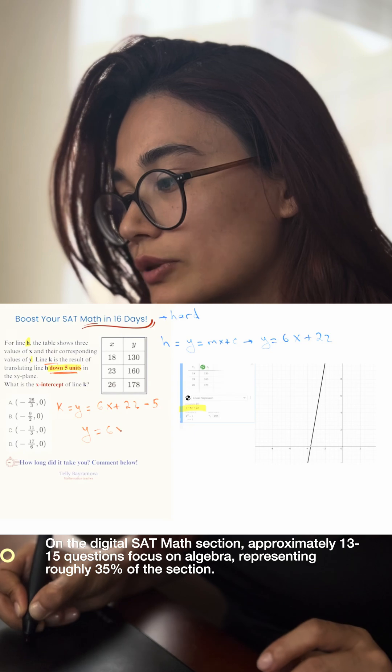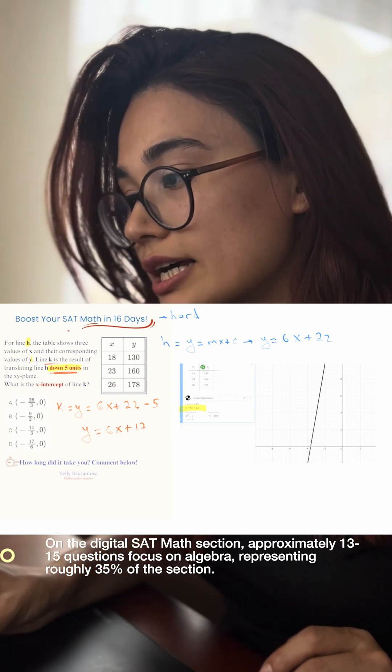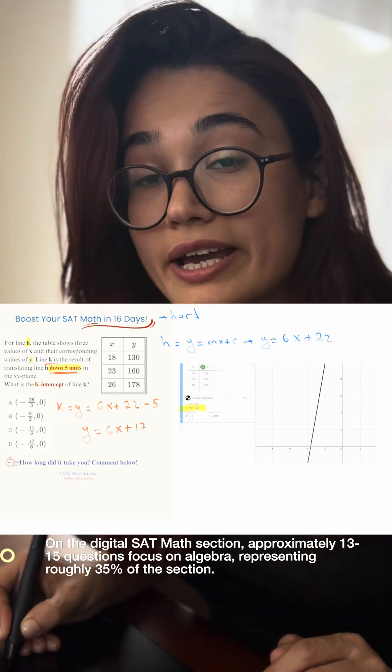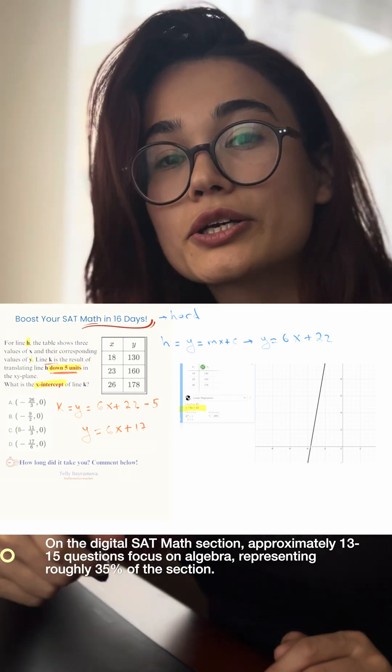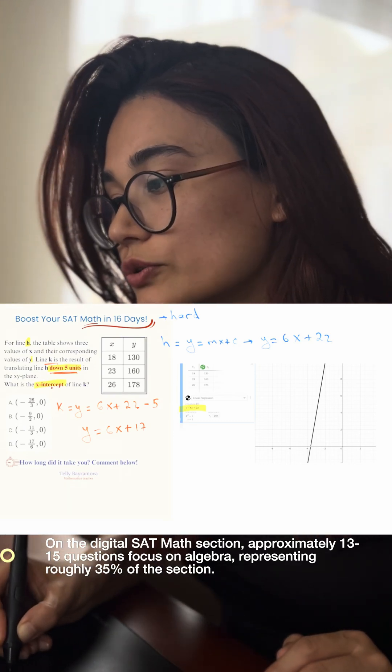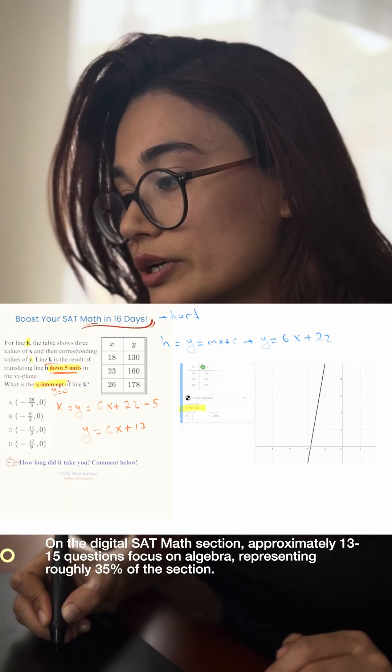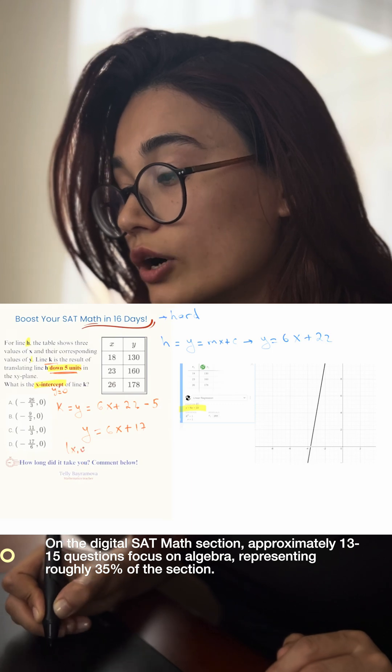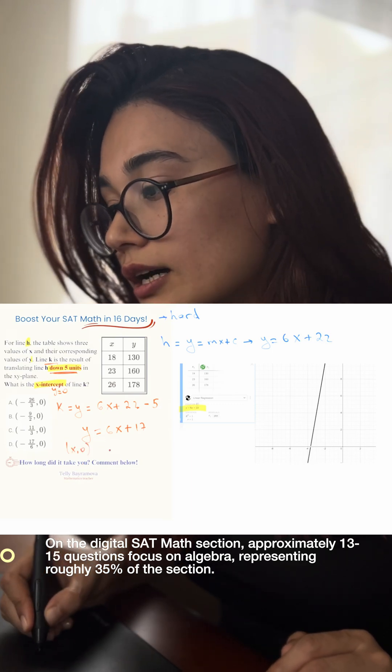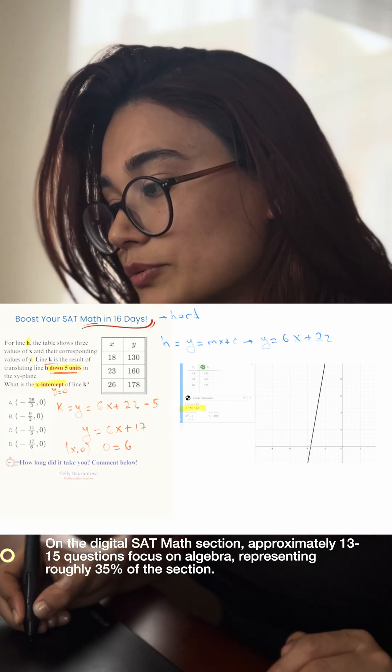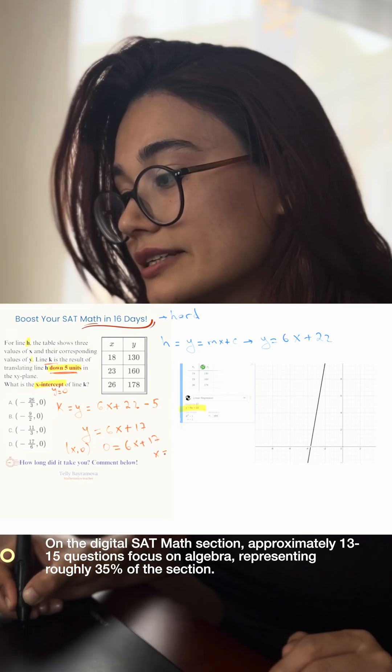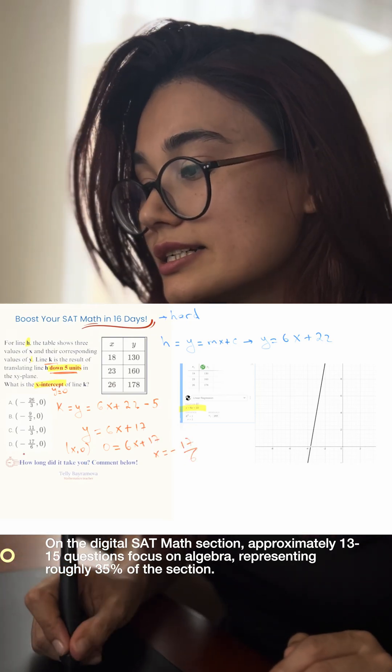X-intercept means that y equals zero. So when y equals zero, it means that as a coordinate you can show this as (x, 0). Let's find x: 0 equals 6x plus 17, and x is negative 17 over 6. The answer is D. So now I just explained the question.